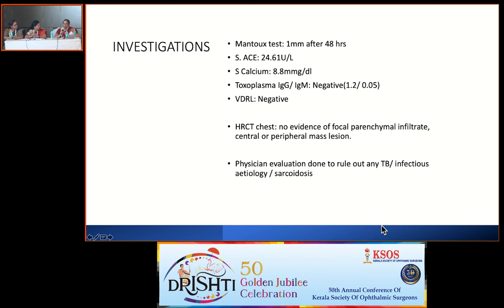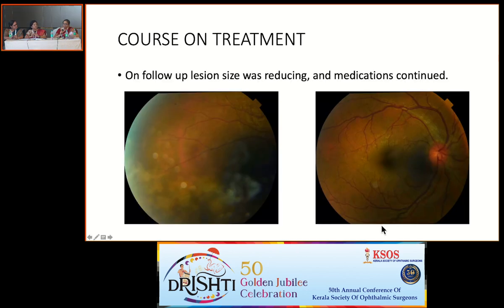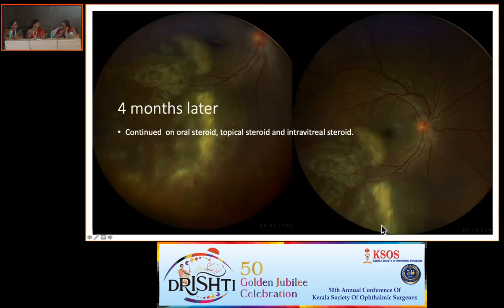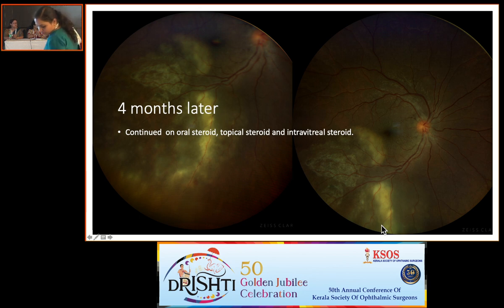The lesions in DUSN are not at the level of choroid — on OCT they are at the outer retina. You should take a fundus photo so you can blow it up and spot the worm easily, looking near the active lesions. Out of six or seven cases, we spotted the worm in only one. But there's a beautiful response to a combination of albendazole and steroids.